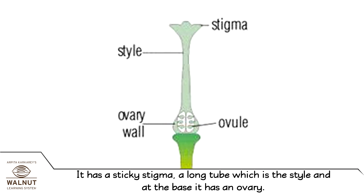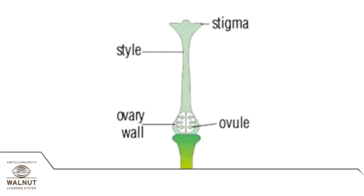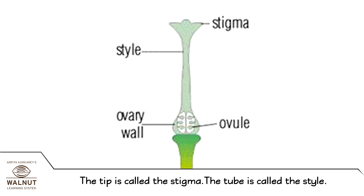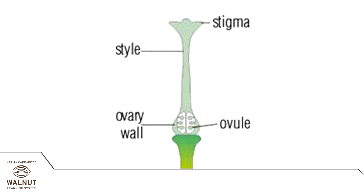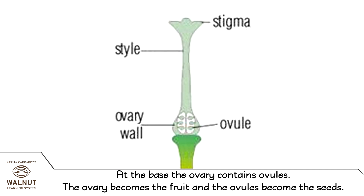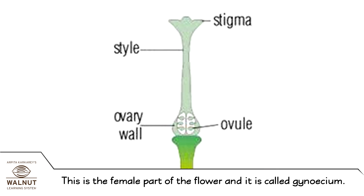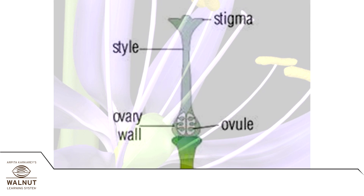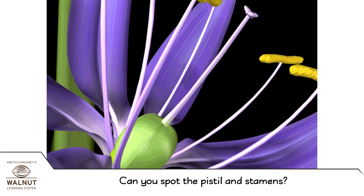The pistil has a sticky stigma, a long tube which is the style, and at the base it has an ovary. The tip is called the stigma, the tube is called the style, and at the base the ovary contains ovules. The ovary becomes the fruit and the ovules become the seeds. This is the female part of the flower and it is called the gynoecium. Can you spot the pistil and stamens?